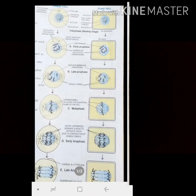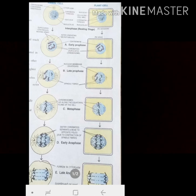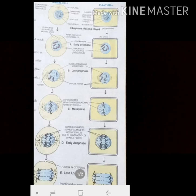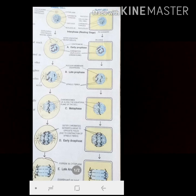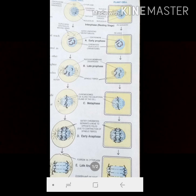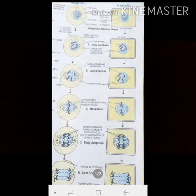To summarize: first comes interphase, which is divided into three stages — the first growth phase (G1), the synthesis phase (S), and the second growth phase (G2). Then comes mitosis with its four stages: prophase, metaphase, anaphase, and telophase. Lastly, cytokinesis occurs, where two daughter cells are formed. These are all the different stages of mitosis.